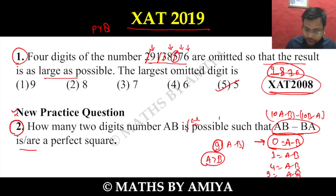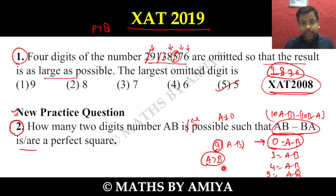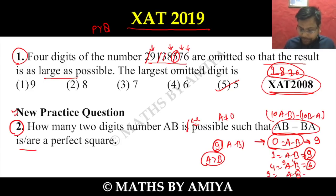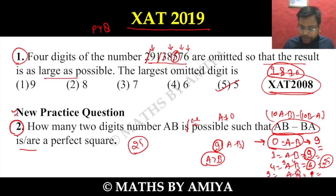We have four cases. Case 1 — A − B = 0: the leading digit cannot be 0, so A goes from 1 to 9, giving 9 values. Case 2 — A − B = 1: A goes from 1 to 9, again 9 values. Case 3 — A − B = 4: A goes from 4 to 9, giving 6 values. Case 4 — A − B = 9: only A = 9, B = 0, giving 1 value. Total: 9 + 9 + 6 + 1 = 25.